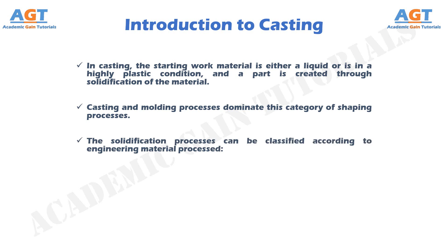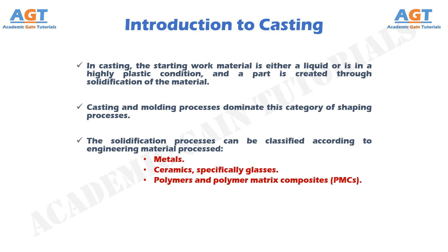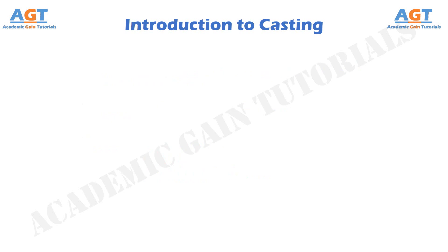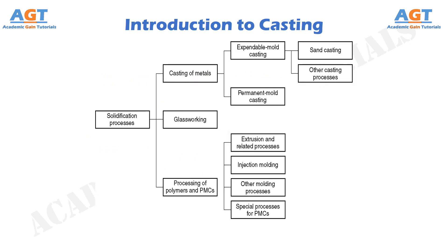The solidification processes can be classified according to the engineering material being processed: solidification of metals, solidification of ceramics — specifically glasses — and the solidification of polymers and polymer matrix composites, or in short, PMCs. So, during casting, the solidification processes can be classified into three types: casting of metals, glassworking, and processing of polymers and PMCs.